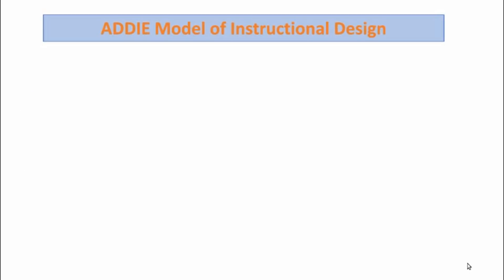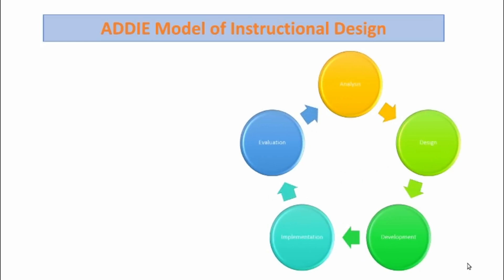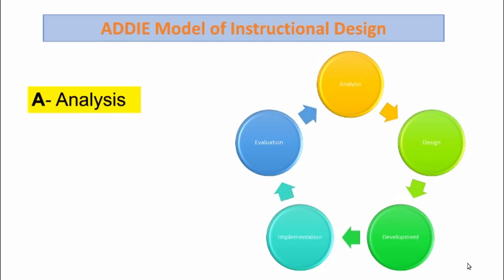ADDIE is one of the oldest instructional design models which is used by instructional designers in any sector, be it education or corporate. This model helps the content developers to create lessons in a systematic and organized manner. ADDIE model represents five essential phases that are involved in the content development process, and these phases denote analyze, design, development, implementation, and evaluation.